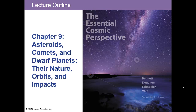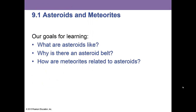Welcome to Chapter 9 on Asteroids, Comets, and the Dwarf Planets. Our goals for the asteroids and meteorites discussion will be: what are asteroids like, why is there an asteroid belt, and how are meteorites related to asteroids.